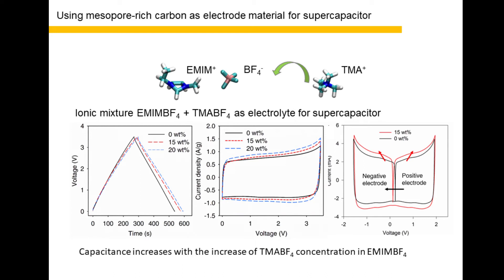In mesopore-rich carbon, based on GCD curve and CV curve, we can observe that the capacitance increases with the increase of TMA concentration. The butterfly curve allows us to analyze the voltage window of positive and negative electrodes separately. The balance between positive and negative electrodes moves to the negative electrode side after the adding of TMA ions, indicating more cations are absorbed on the negative electrode.